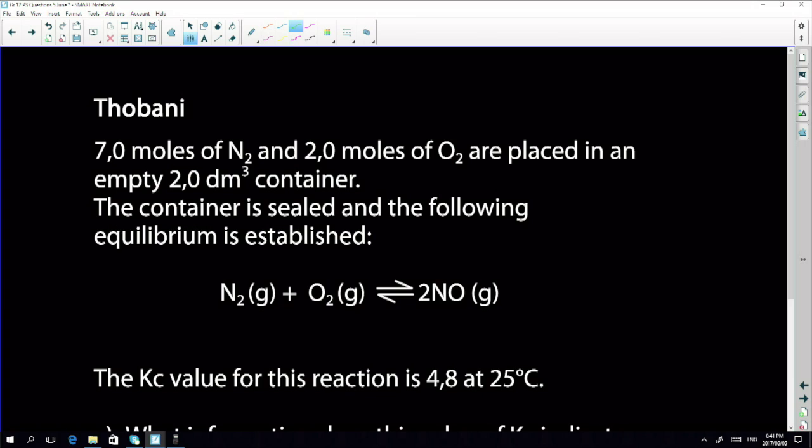So moving on. All these things we do. So Tobani, you sent in such a nice question and when I first looked at it I went, oh, I don't want to do a gasy calculation and then I read it and went, oh, actually this is a nice question. So it says to us, seven moles of N2 and two moles of O2 are placed in a two decimetre cubed container. So I've got seven moles and two moles and my container is two decimetres cubed. Container is sealed and the following equilibrium is established.